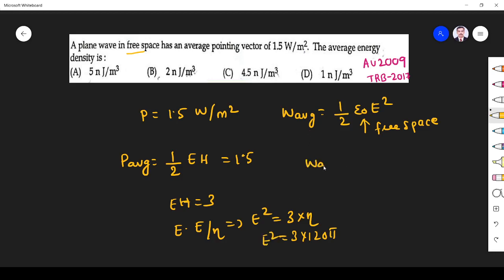What I want is average power w average, given by 1 by 2 epsilon naught. Epsilon naught is 8.854 into 10 power minus 12. E square is given by 3 into 125.